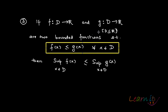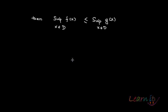Note that the domain is the same for both functions. Then the result says that the supremum of f(x) is always less than or equal to the supremum of g(x) for all domain elements. To understand what we are trying to say, we will look at the functions graphically.